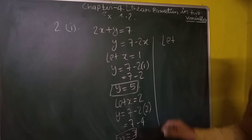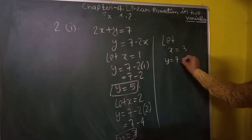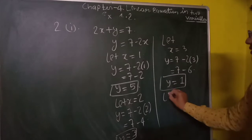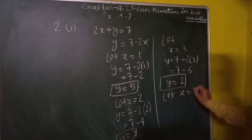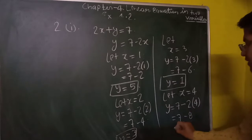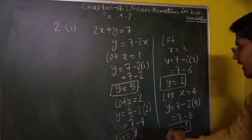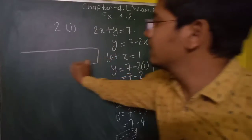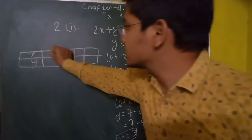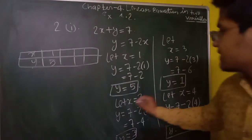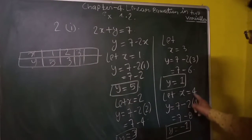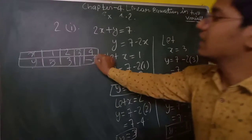We need to find 4 solutions total. Let x equal to 3, so y equals 7 minus 2 into 3, that is 7 minus 6, which equals 1. Let x equal to 4, so y equals 7 minus 2 into 4, that is 7 minus 8, which equals minus 1. We can now make a table: x=1, y=5; x=2, y=3; x=3, y=1; x=4, y=minus 1.